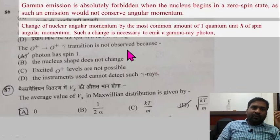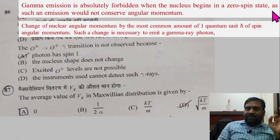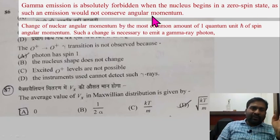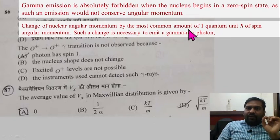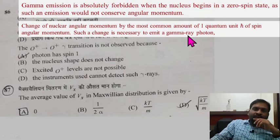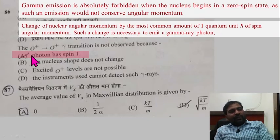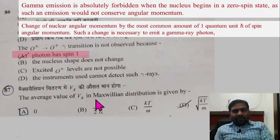Question 86: The 0⁺ → 0⁺ gamma transition is not observed because gamma transition is absolutely forbidden when the nucleus begins in a spin-0 state. Angular momentum must be conserved, and a gamma ray photon has spin 1. Emitting a photon with spin 1 from a 0→0 transition would not conserve angular momentum. So this transition is forbidden.